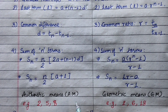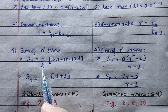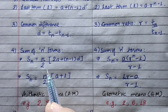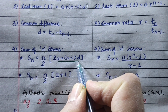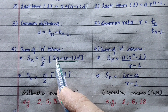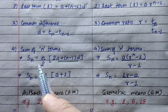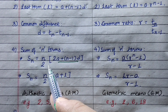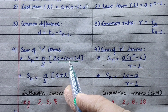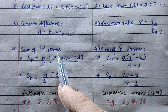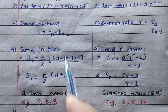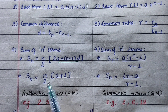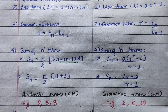For the sum of n terms, Sn equals n by 2, bracket 2a plus n minus 1, d. If we know the first term and last term, we simplify to Sn equals n by 2, bracket a plus l. Here 'a' is the first term, 'l' is the last term, and 'n' is the number of terms. This is the sum of n terms of arithmetic progression or series.